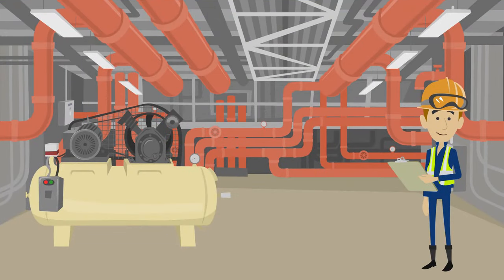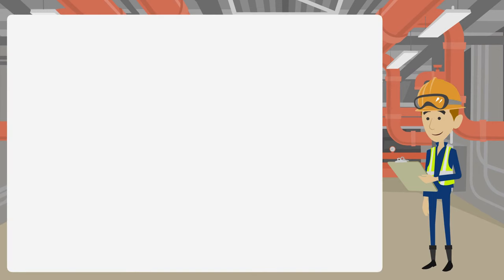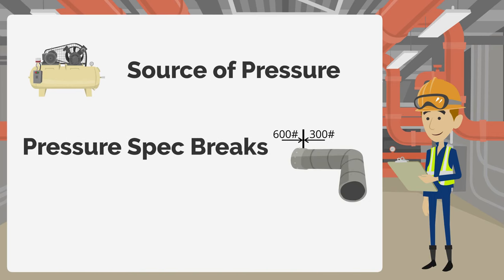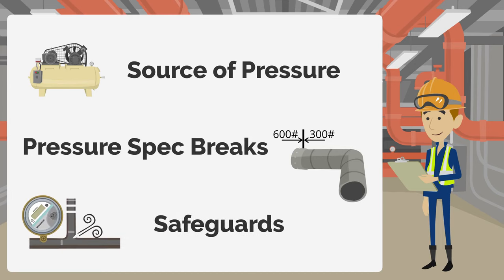Blocked flow overpressure is a serious hazard when dealing with pressurized equipment. There are some important things to look out for to identify and prevent overpressure from occurring. First, identify the source of pressure — sources include pumps, compressors, and wells. Next, identify where the pressure spec breaks are and the maximum pressure each piece of equipment and connecting piping can withstand. Comparing source pressure to rated pressures will identify if overpressure is credible. Finally, if any point along a flow path is blocked and overpressure is credible, we must ensure there are enough safeguards — like shutdowns and pressure relief valves — in place to protect all affected equipment.